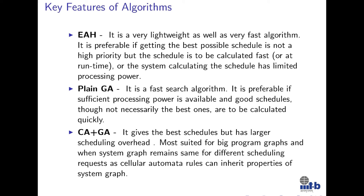Key features of the algorithms: the efficiency-based allocation heuristic is preferable if getting the best possible solution is not the highest priority but the schedule needs to be calculated fast. The plain genetic algorithm is a fast search algorithm, preferable if sufficient processing power is available and good schedules, though not necessarily the best, are to be calculated quickly. The cellular automata and genetic algorithm combination gives the best schedules but has larger scheduling overhead; it is more suited for big program graphs and when the system graph remains the same for different scheduling requests, as cellular automata rules can inherit the properties of the system graph.